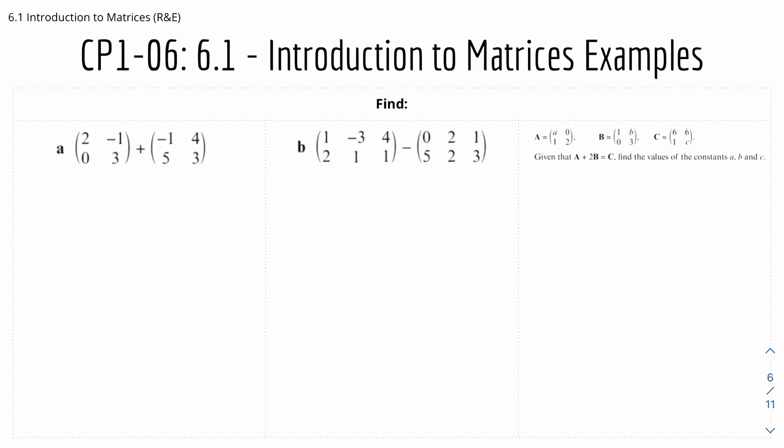And lastly here's some introduction to matrices examples. So number one we have just basically adding the matrices. As I mentioned to add the matrices together we just add the corresponding elements. So the first element would be 2 plus minus 1 which is 1. The second element would be minus 1 plus 4 which is 3, so 1, 3. And the third element right here would be 0 plus 5 which is 5. And the fourth element is 3 plus 3 which is 6.